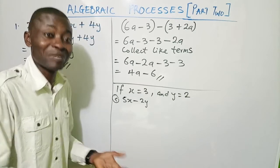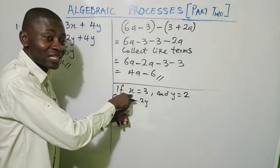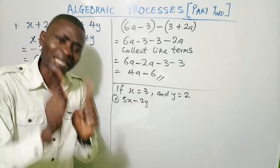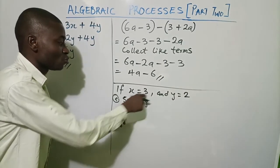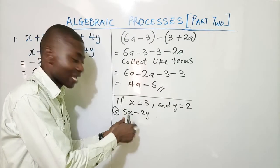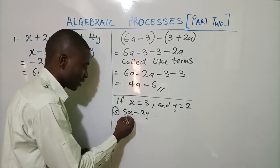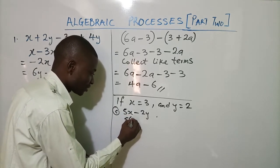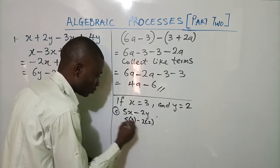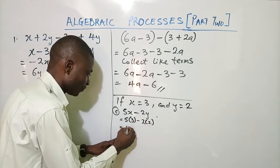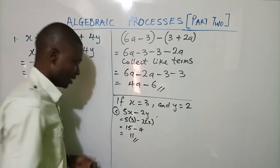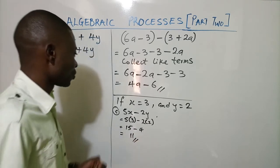Substitution means: wherever you see x, change it to 3. Note that 5x does not mean 53 — it means 5 times x. Since x is 3, this becomes 5 times 3, minus 2 times y. The value of y is 2, so it is 5 times 3 minus 2 times 2. That gives 15 minus 4, which equals 11.